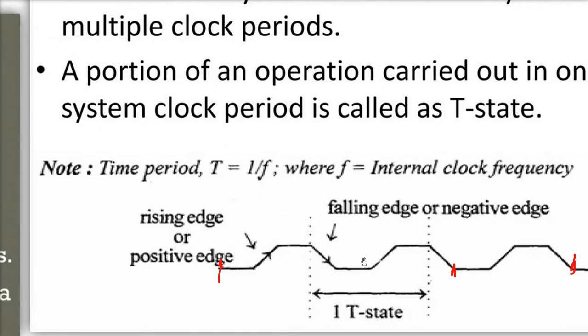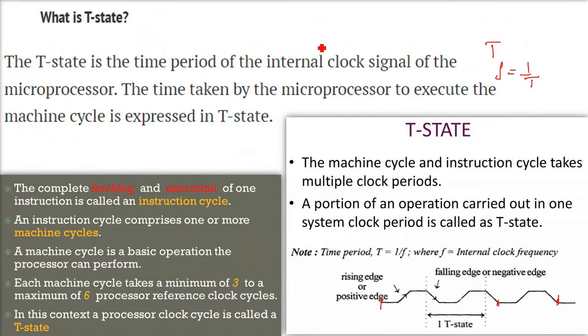Here you see, it can be this is a falling edge, this is a falling near edge. One T-state, we can just say that this is some part, some portion where the operation will be carried out.